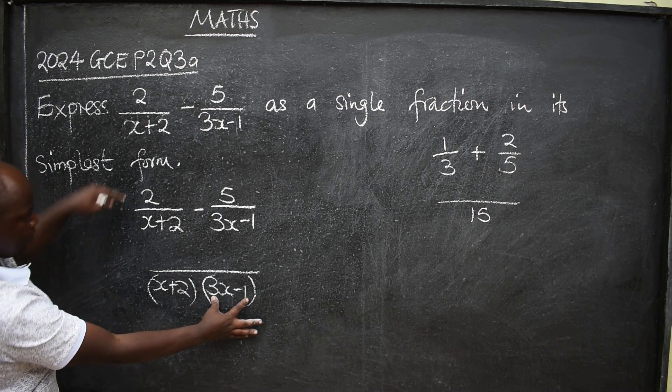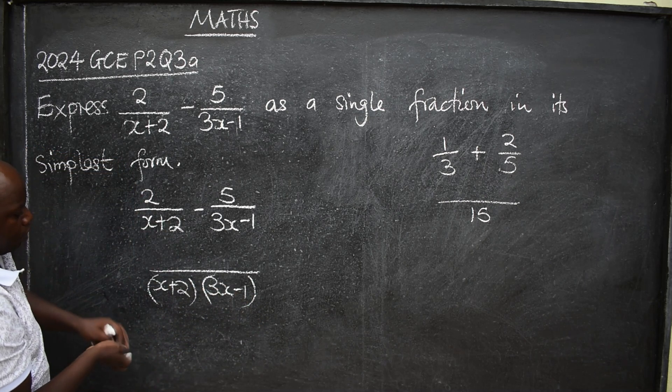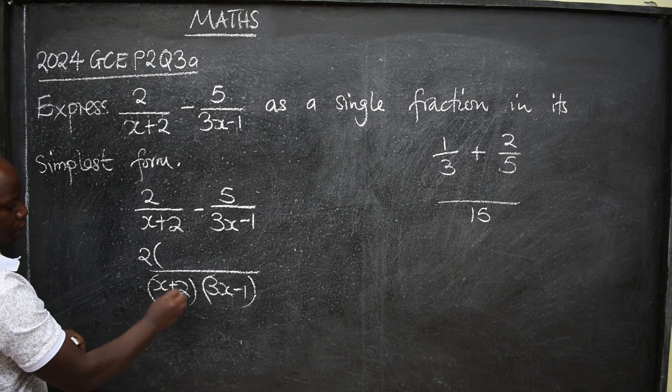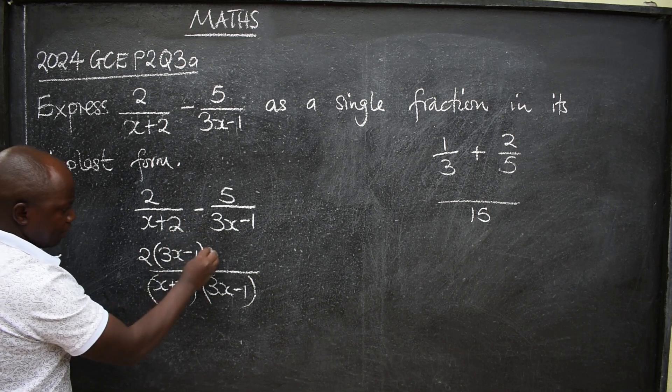You're going to remain with this. Then multiply with the numerator here. So 2 times this, which will give us 2, 3x minus 1, like this. Minus here.